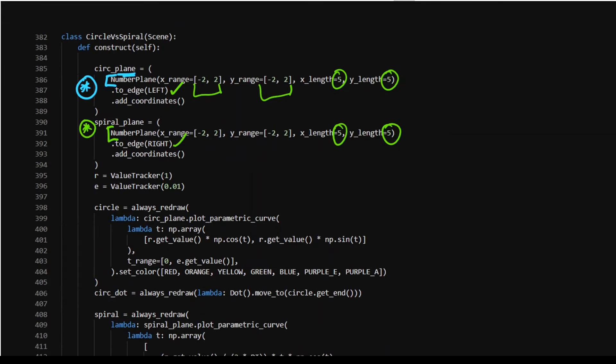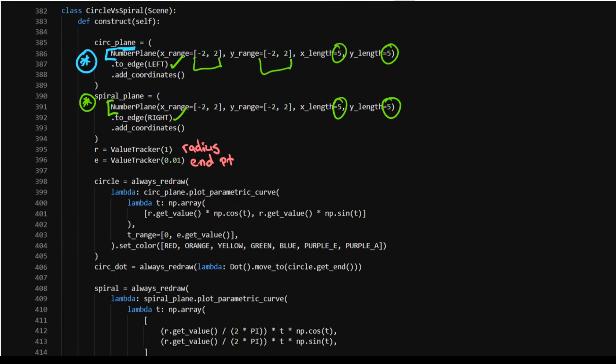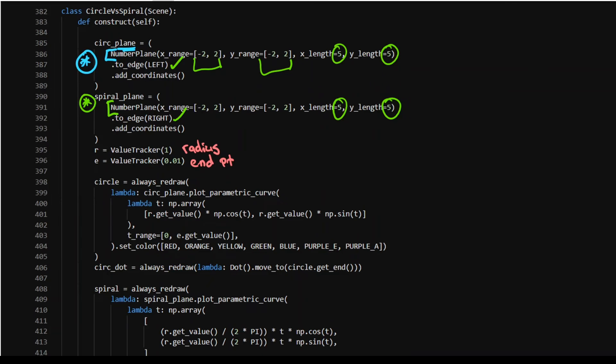And we have some value trackers. This one's going to track the radius, R for radius. And this one's going to track the end point, E for end point. Now, let's get into it.